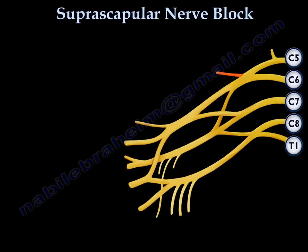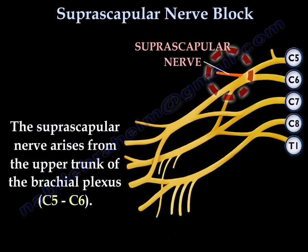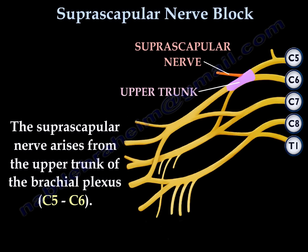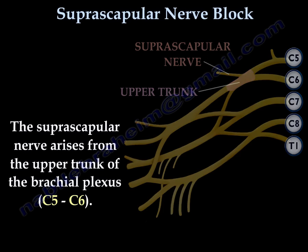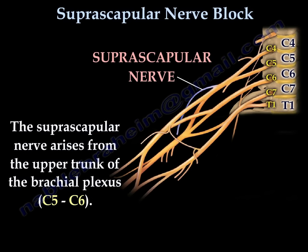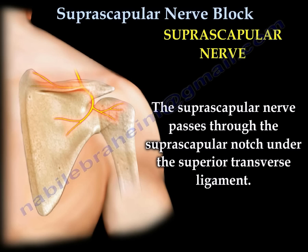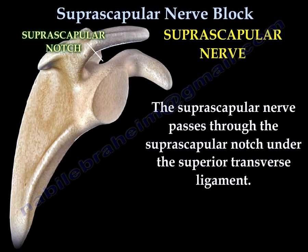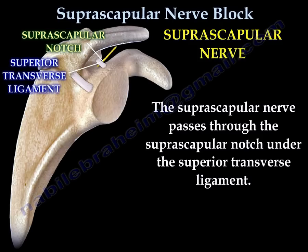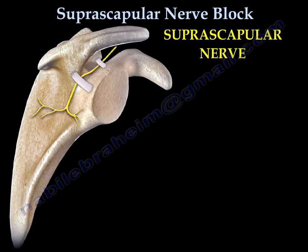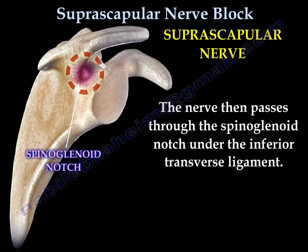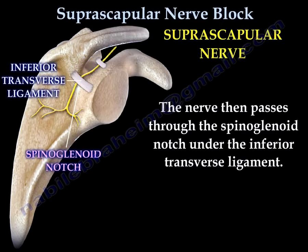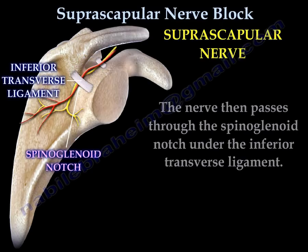Suprascapular Nerve Block. The suprascapular nerve arises from the upper trunk of the brachial plexus from C5-C6. The nerve passes through the suprascapular notch under the superior transverse ligament, and then passes through the spinoglenoid notch under the inferior transverse ligament.